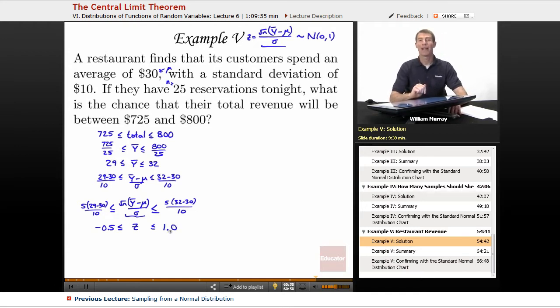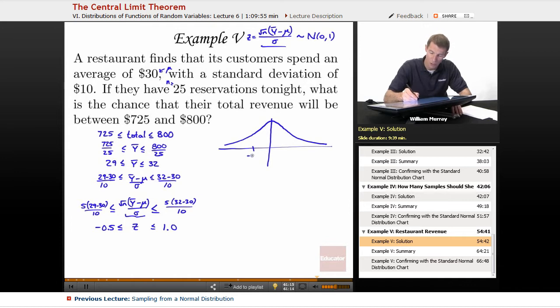And then the point of this was we were building up a standard normal variable, so that's my z right there. This is between negative 0.5 and 5 over 10 is still 1 half, 32 minus 30 is 2, so 2 times 1 half is just 1.0. And so now I have a standard normal variable, and I want to find the probability that it's between negative 1 half and positive 1. Let me draw that graph of what I'm looking for.